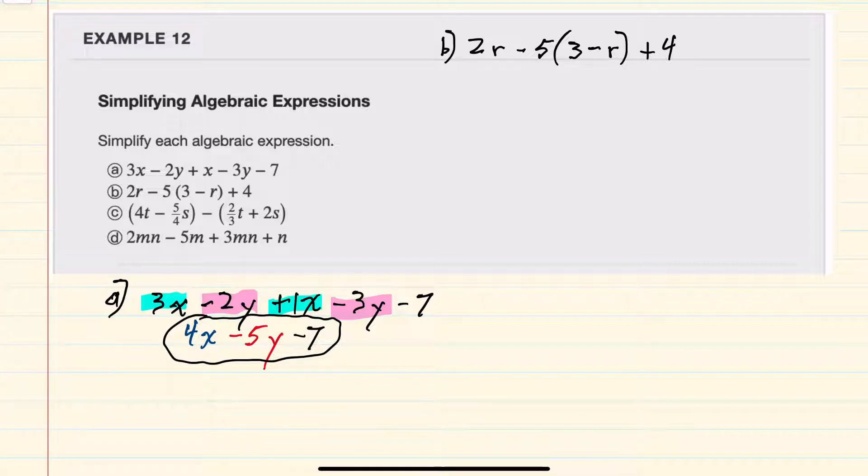Moving on to expression B. Before we can add or combine any like terms, we need to remove any parentheses. And here the parentheses is being used to show that the negative 5 is being multiplied by everything inside the parentheses. So we will need to distribute that negative 5 to both terms.